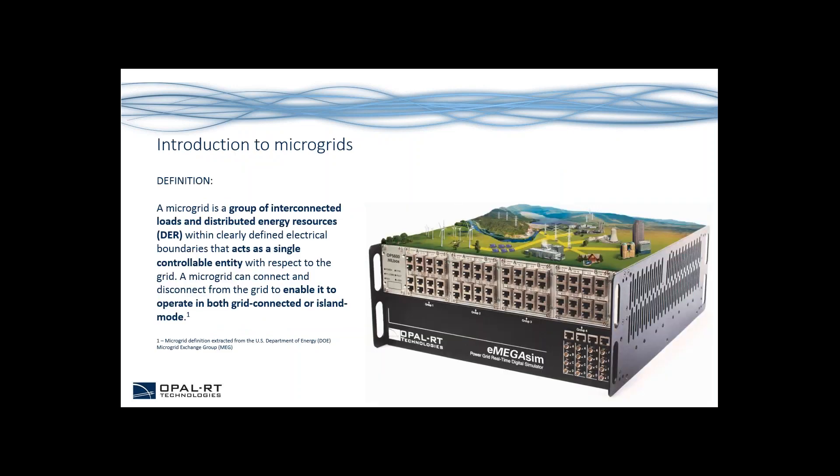First, an introduction to microgrids. The definition of the United States Department of Energy microgrid exchange group goes like this: a microgrid is a group of interconnected loads and distributed energy resources within clearly defined electrical boundaries that acts as a single controllable entity with respect to the grid. A microgrid can connect and disconnect from the grid to enable it to operate in both grid-connected and island mode.